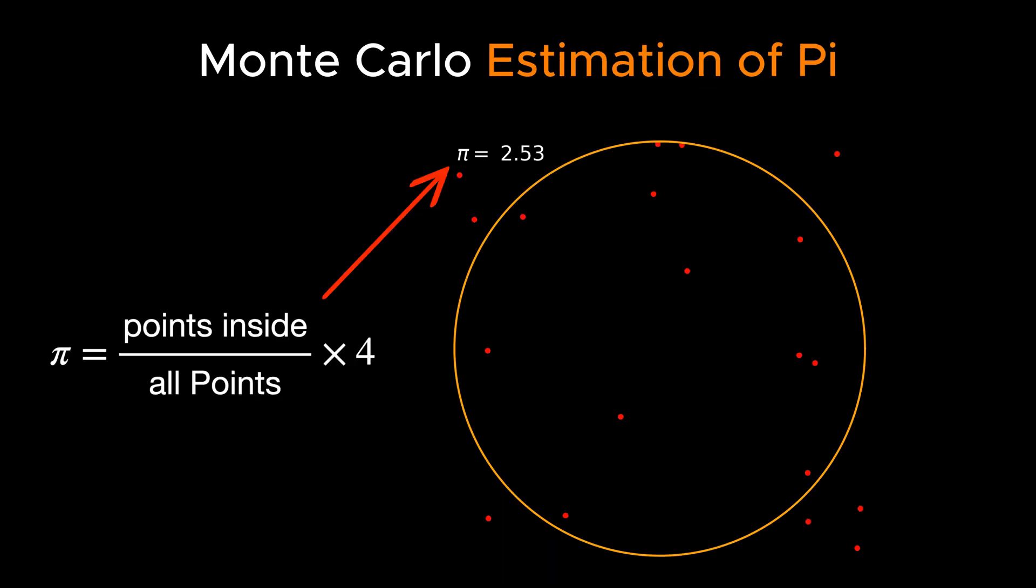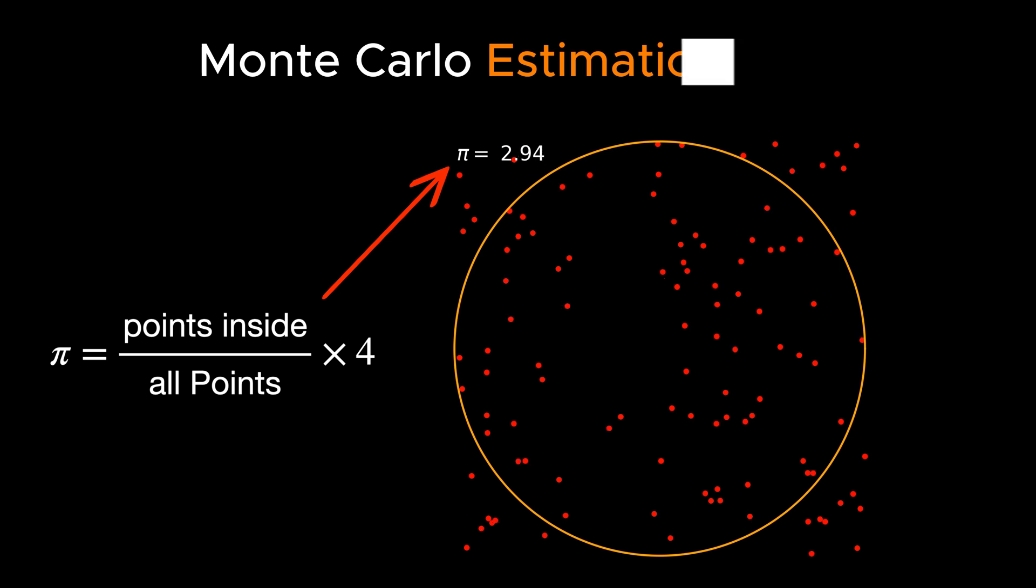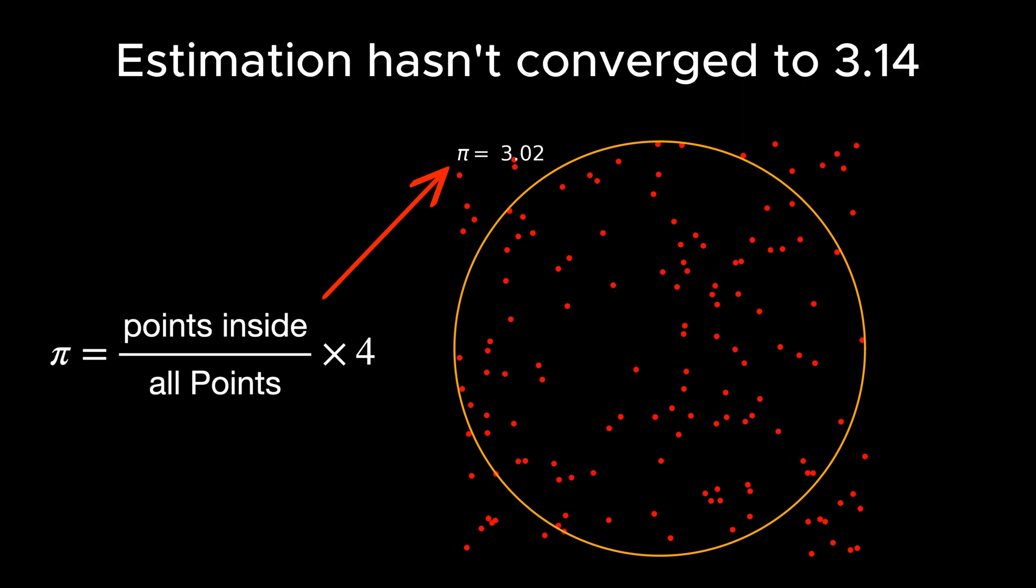The Monte Carlo method uses random sampling to approximate solutions to problems that are too complex to solve directly. Instead of trying to calculate an exact solution, which might be impossible or computationally expensive, we rely on randomness to simulate possible outcomes.